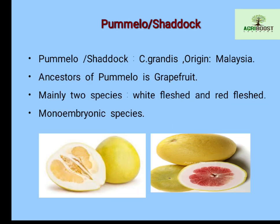The next important citrus group is pamelo or shadok. The scientific name is Citrus grandis and its origin is Malaysia. The ancestor of grapefruit is pamelo. There are two species in pamelo — white flesh and red flesh. It is a monoembryonic species of citrus.